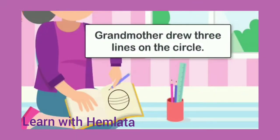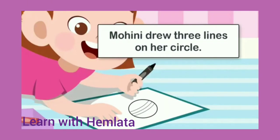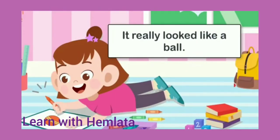Grandmother drew three lines on the circle. Us circle ke andar grandmother ne teen lines draw kar diyen. Now Mohini drew three lines on her circle, same as her grandmother had done. It really looked like a ball. Ab Mohini bhi bilkul usi tarah teen lines draw karti hai, aur woh ball ki tarah dikhne lagta hai.